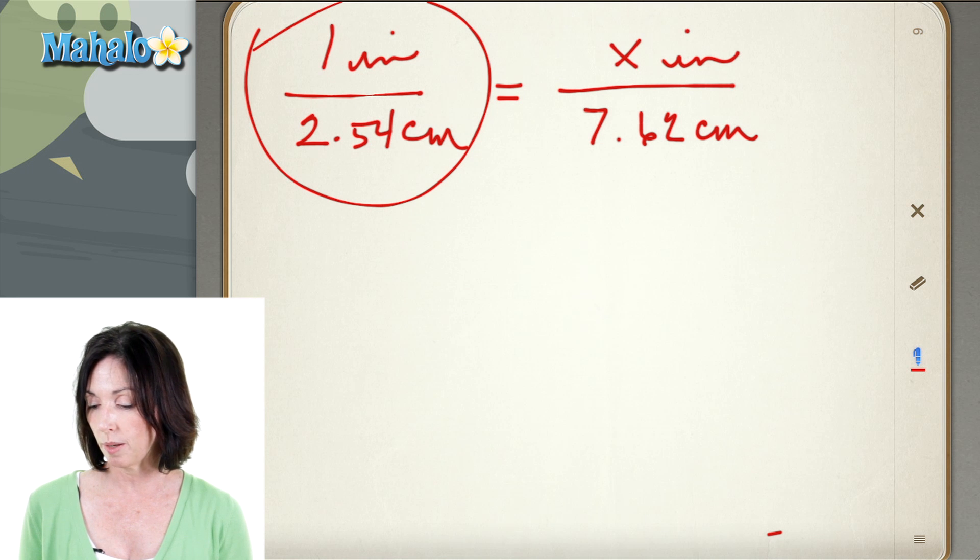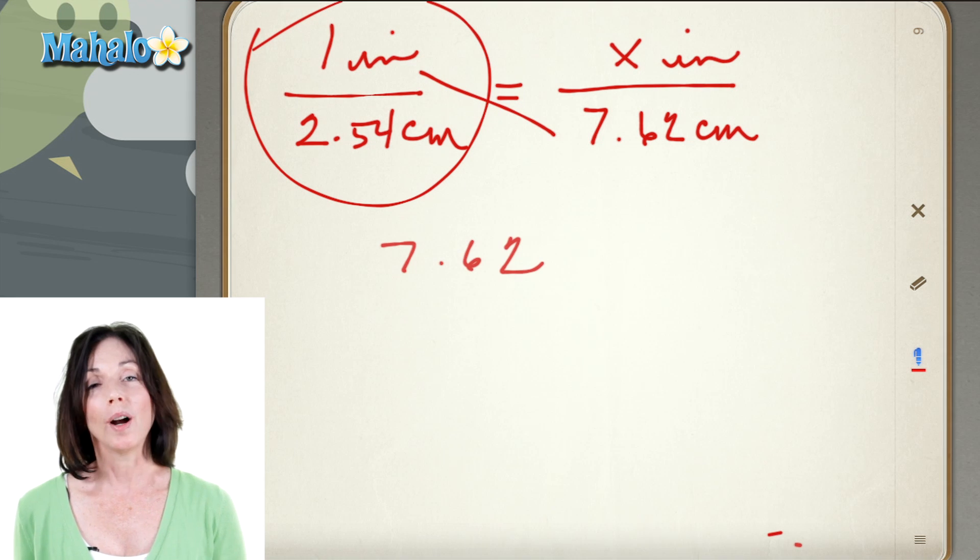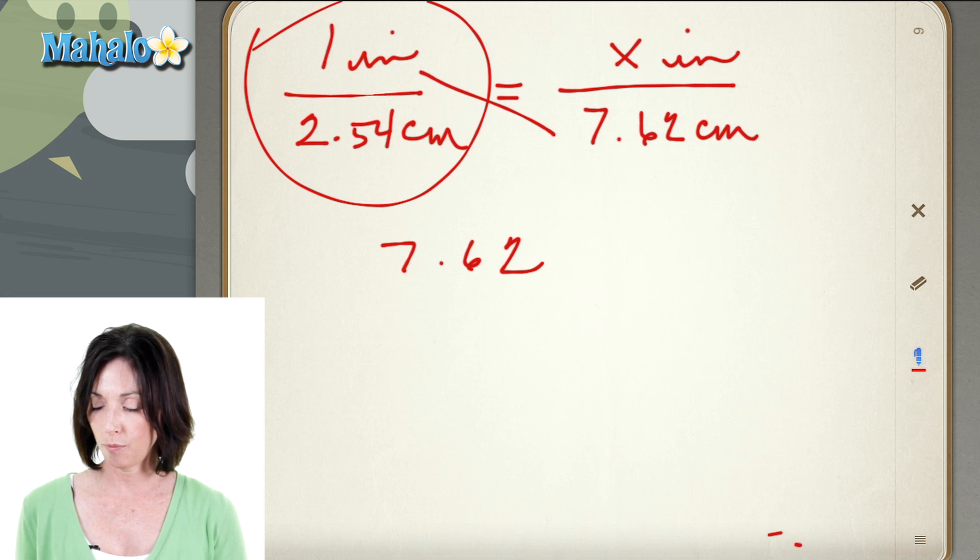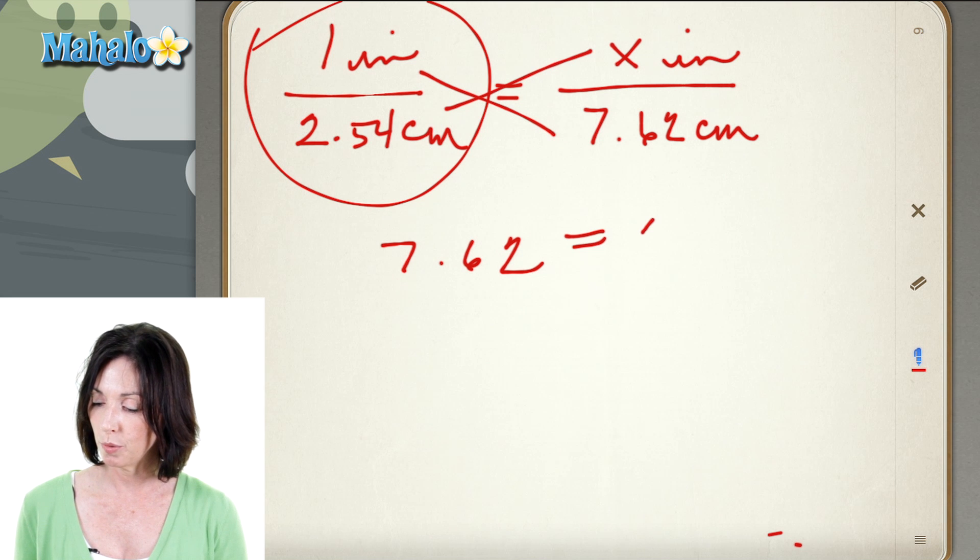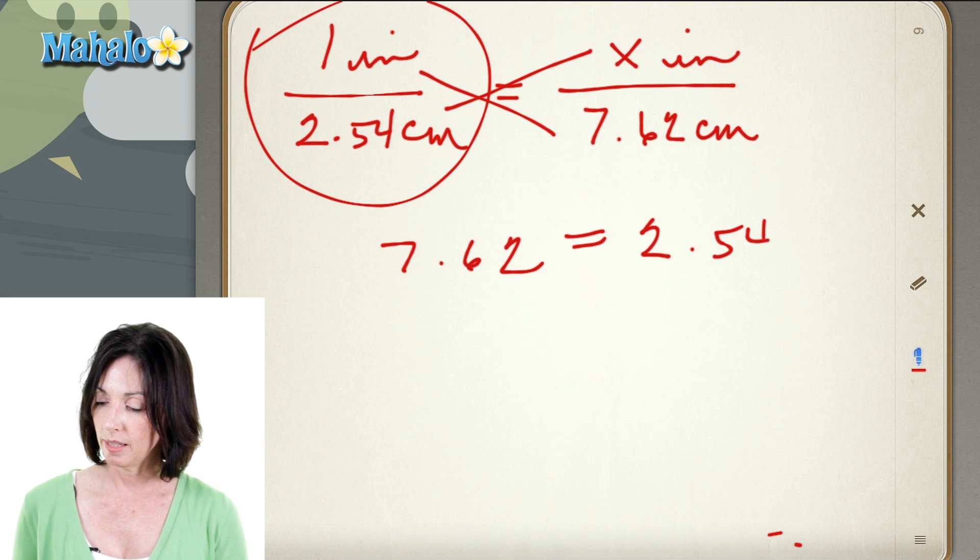Again we're just going to cross multiply. We're going to cross multiply this way. 1 times 7.62 is 7.62 and then we're going to cross multiply this way and we have 2.54 times x.